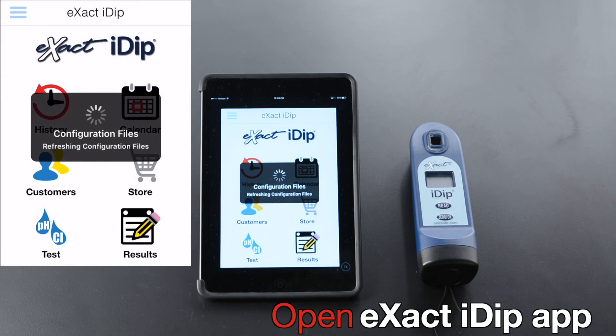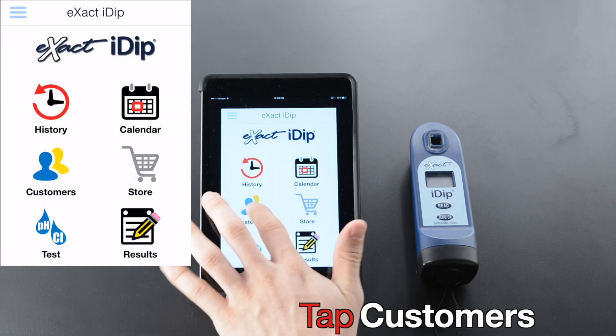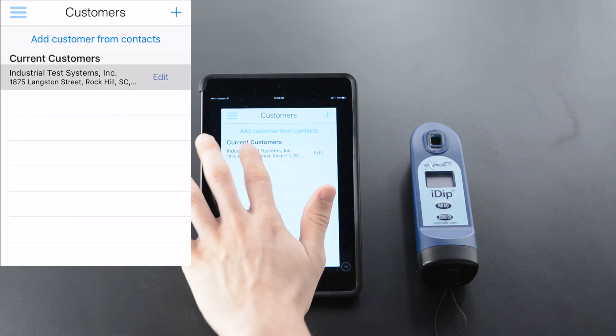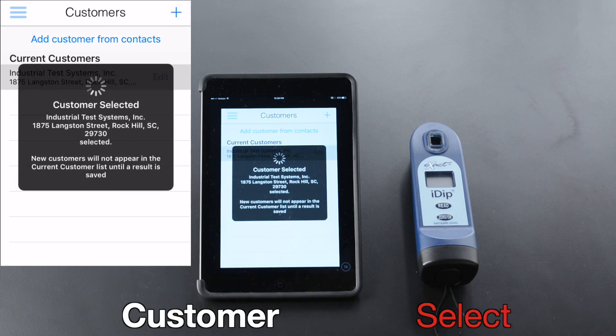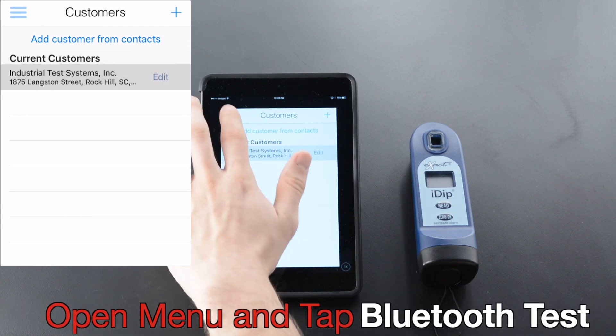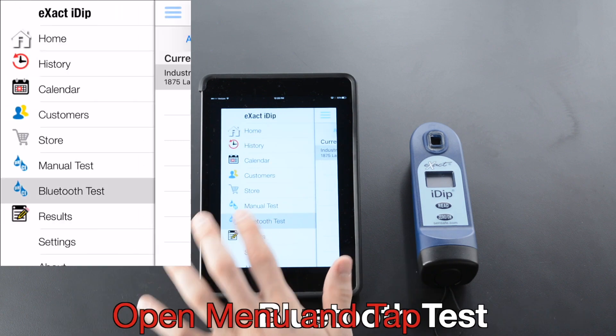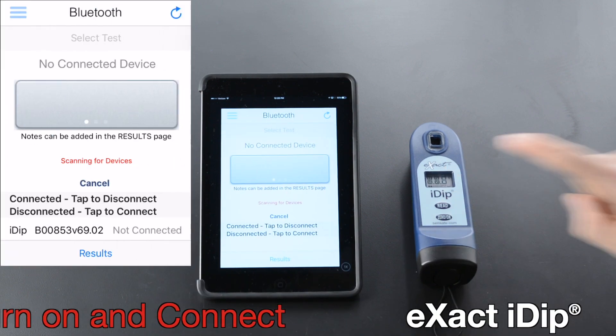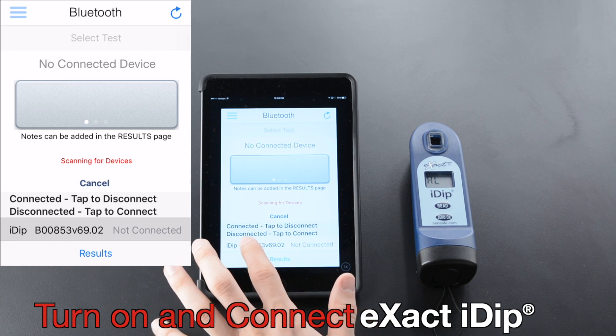Open the Xact iDip app. Tap Customers. Select Customer, open Menu, and tap Bluetooth Test. Turn on and connect Xact iDip.